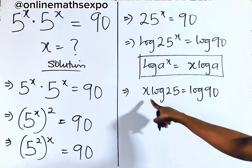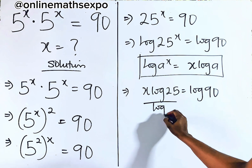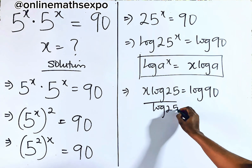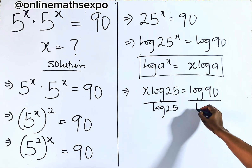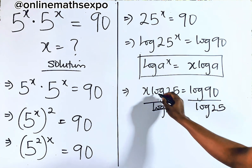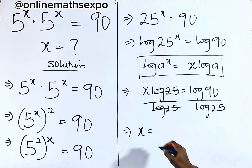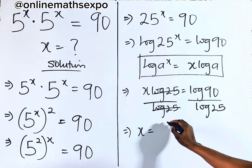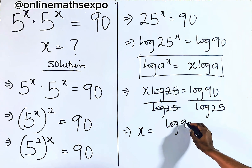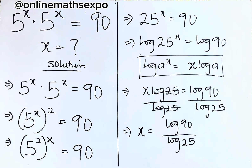Now what do you do? To get x, remove this — you divide by log of 25, and you also do so on the right side. This cancels out, and we are now having x is equal to log of 90 divided by log of 25.